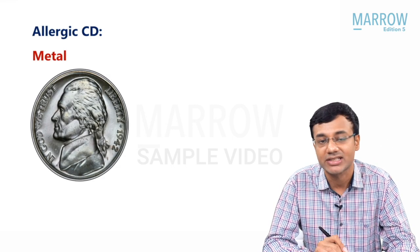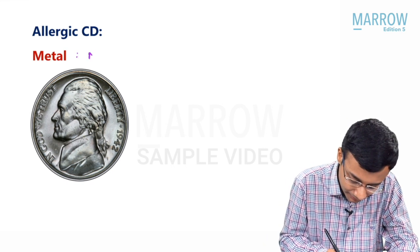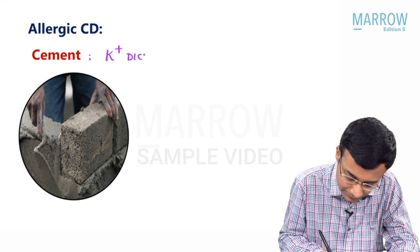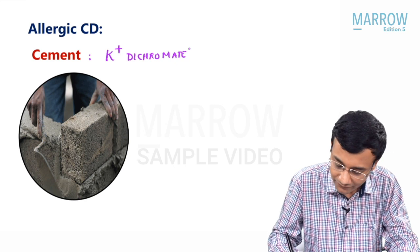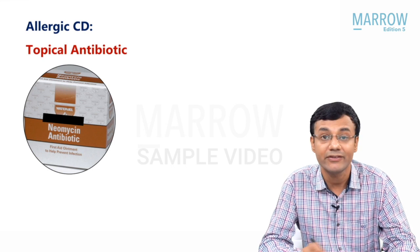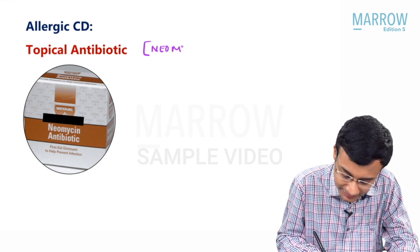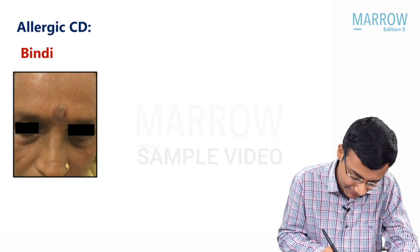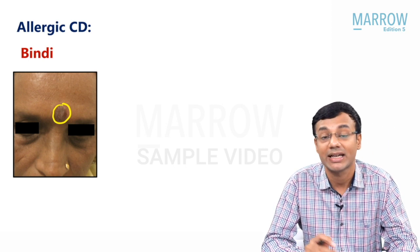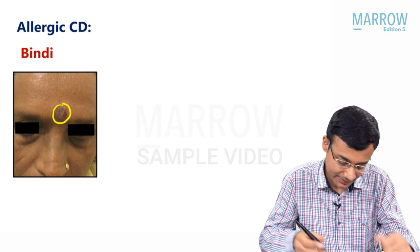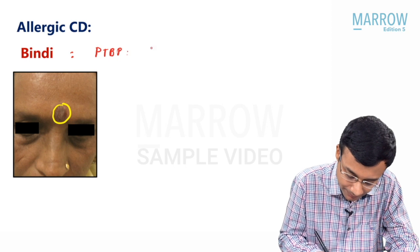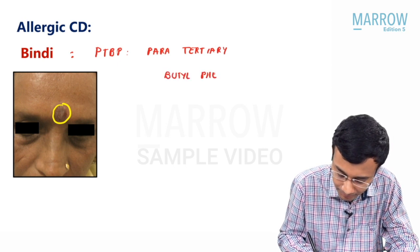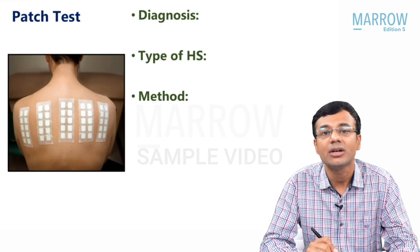Now let's look at the important allergens implicated in allergic contact dermatitis. The most common metal which produces allergy is nickel. The most common allergen documented in cement is potassium dichromate — this has been asked in the AIIMS exam. When using topical medications, the most common antibiotic that dermatologists generally never use is neomycin, as it very commonly causes contact dermatitis. In bindi allergy, patients develop allergy to the adhesive attaching the bindi to the forehead, and this allergen is called PTBP — para-tertiary butylphenol.